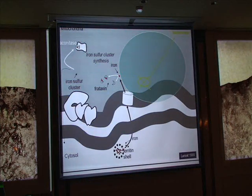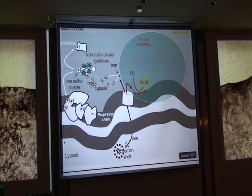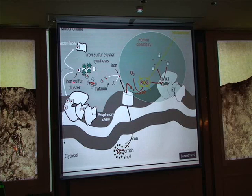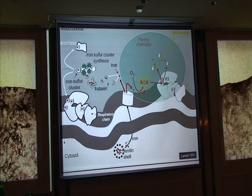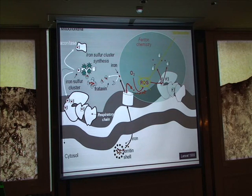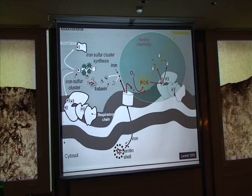Associated with this lack of iron-sulfur cluster synthesis caused by frataxin depletion, you get this chain of chemistry triggered by iron accumulation, which triggers the formation of superoxide and ROS — reactive oxygen species — in the mitochondria. That gave us the idea to propose using idebenone, because idebenone is a very efficient antioxidant that targets mitochondria. We now have some evidence that idebenone can act on this part of the cascade of events associated with frataxin depletion.